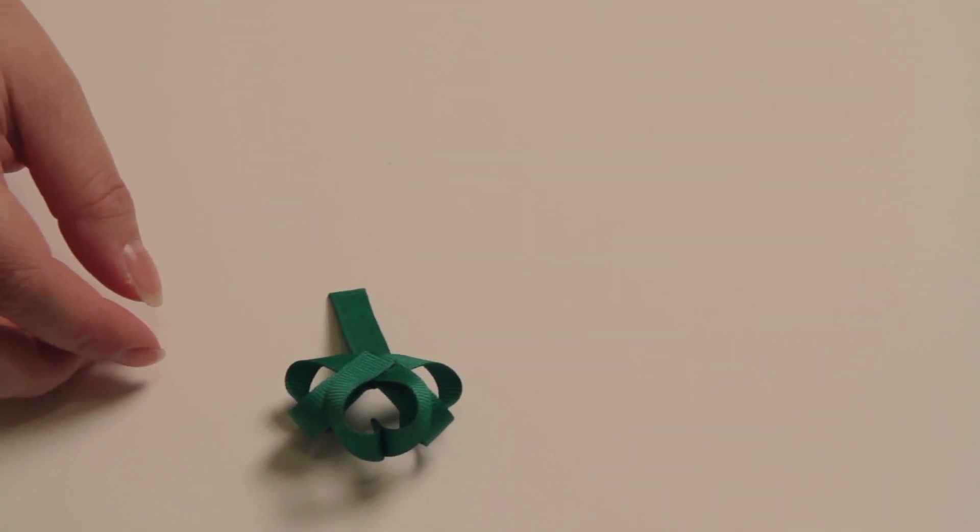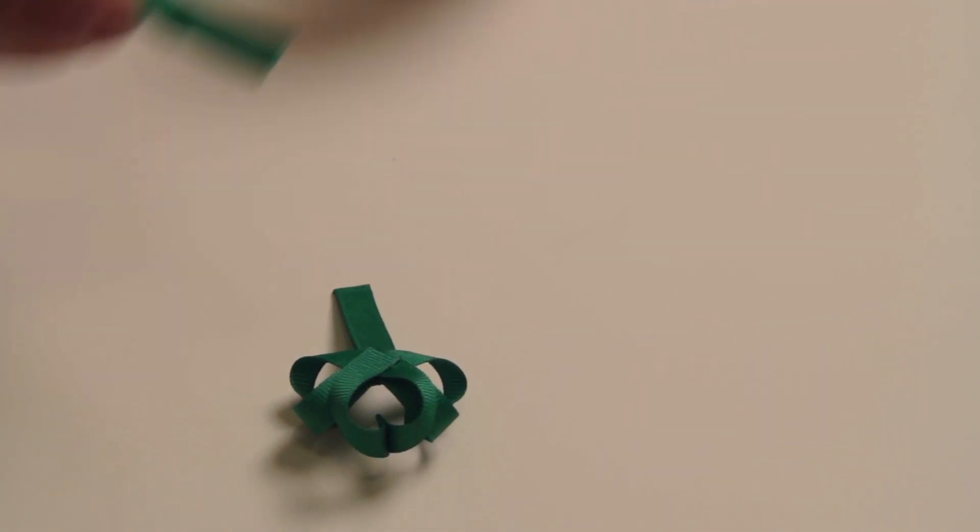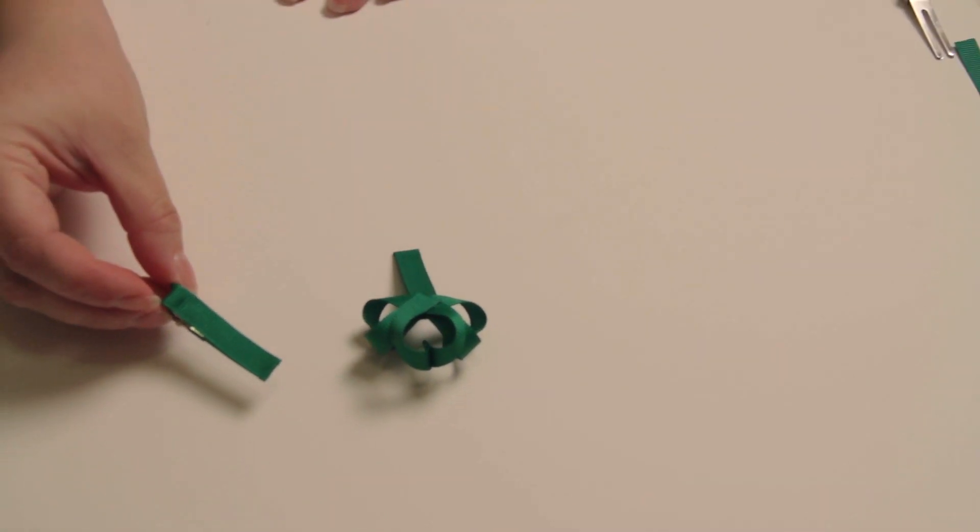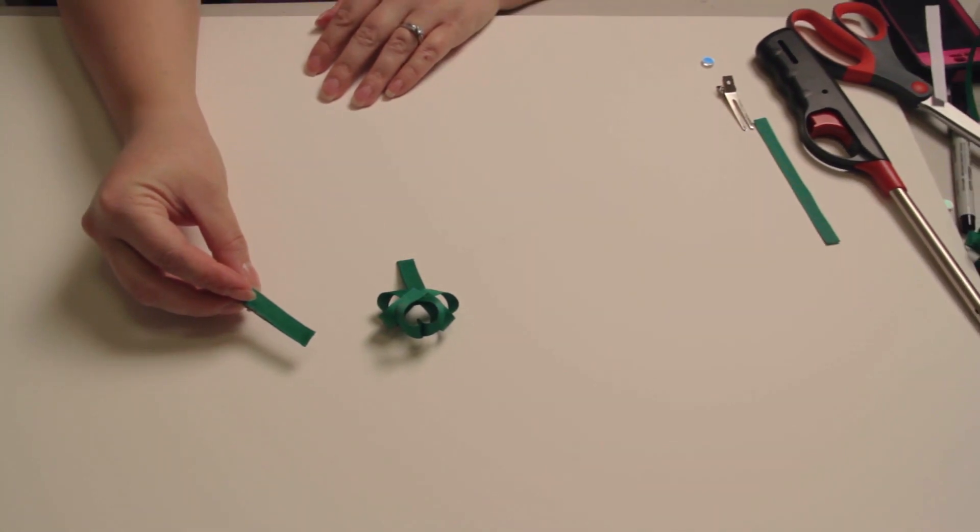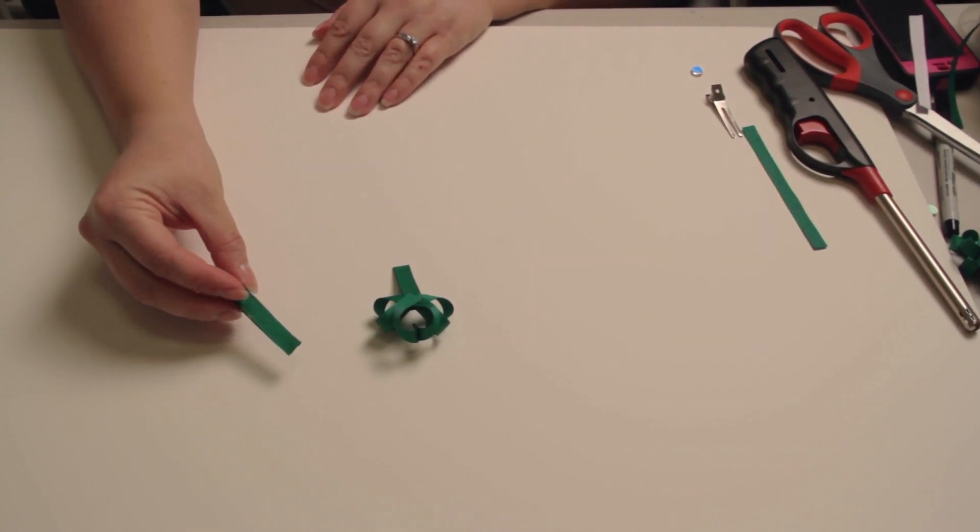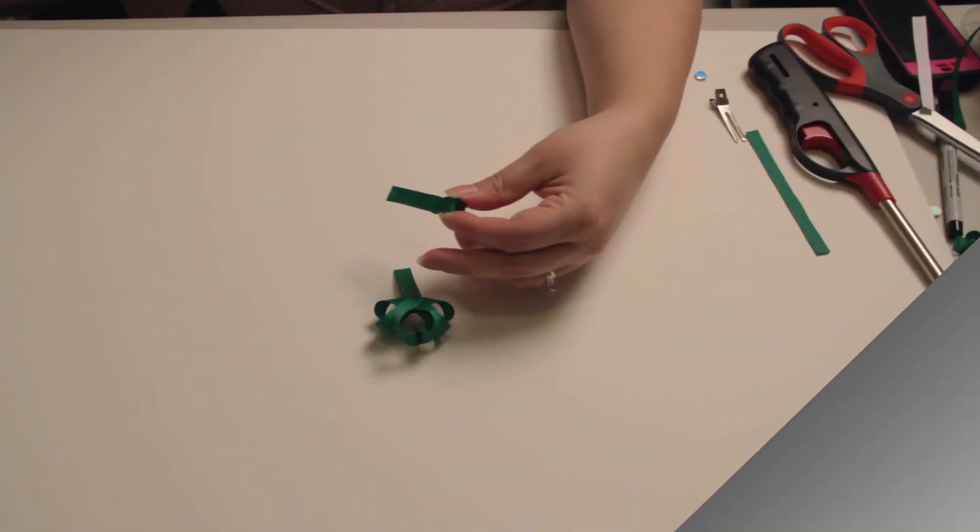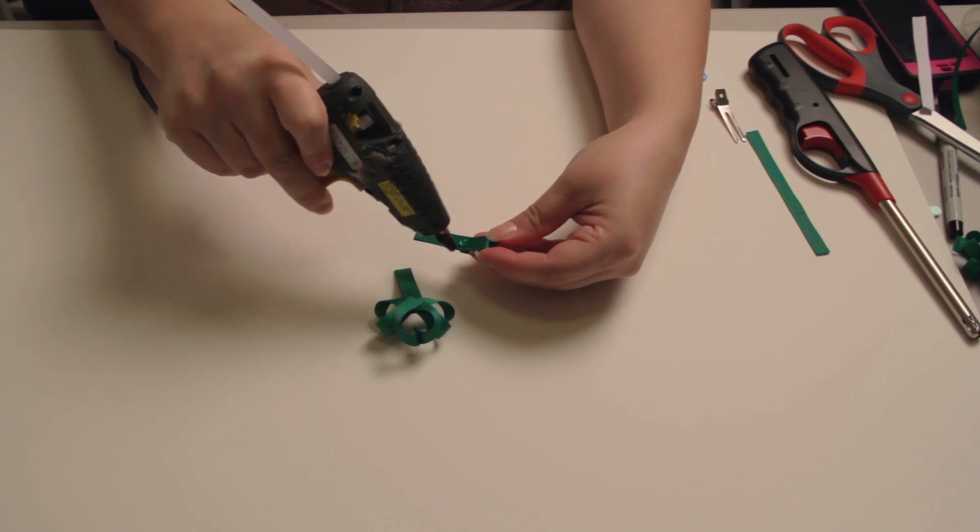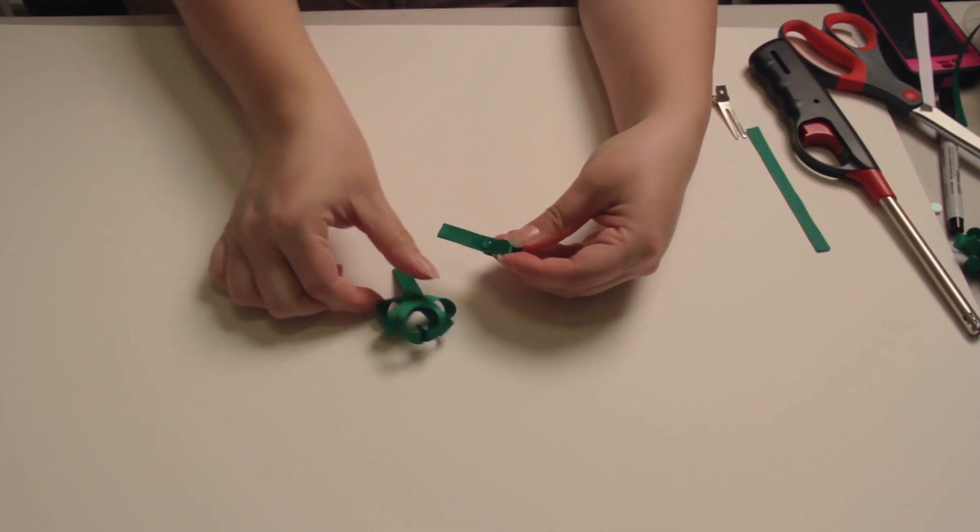After you've got them all glued together you're going to take your alligator clip. I've already covered my alligator clip. If you need instructions on how to do this please click on the link below on how to decorate a hair clip. Now I'm going to glue my clover to my clip. Again just a dot of glue. It doesn't take much.